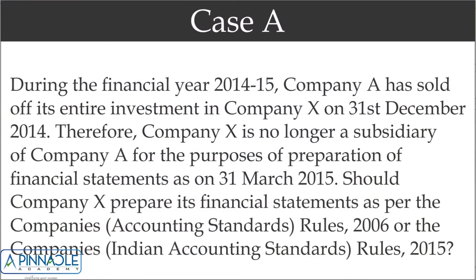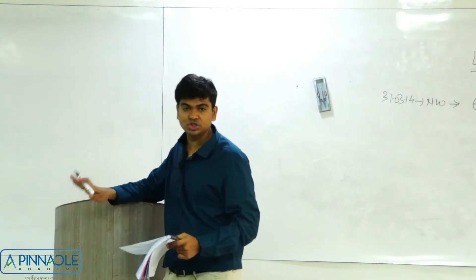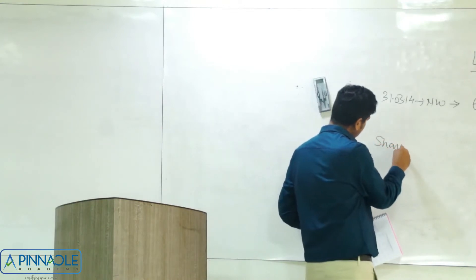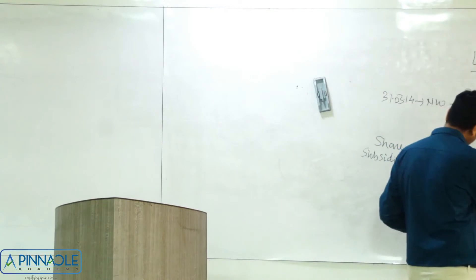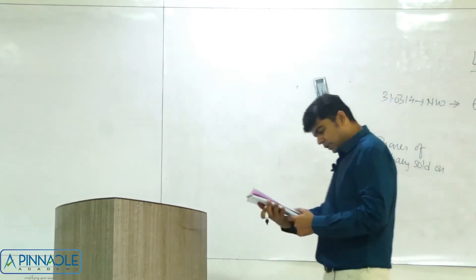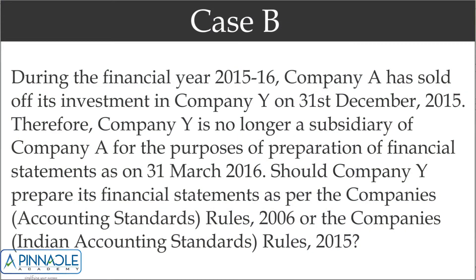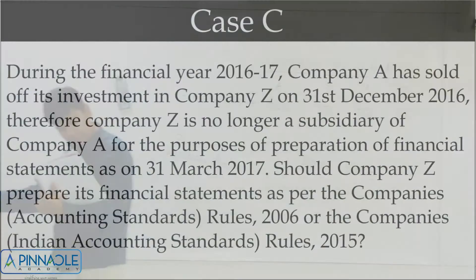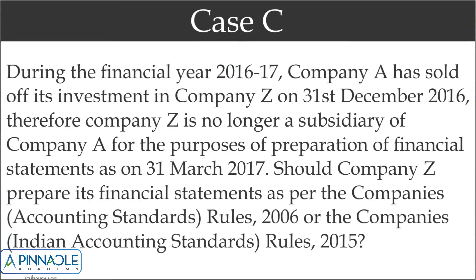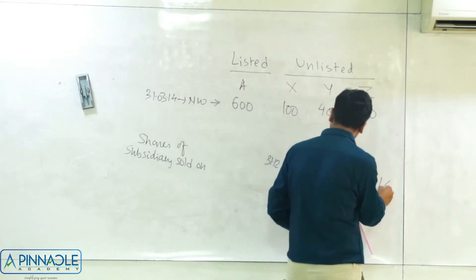During financial year 2014-15, Company A sold its entire investment in Company X on 31st December 2014. In case B, Company A sold its investment in Company Y on 31st December 2015. In case C, during financial year 2016-17, Company A sold its investment in Company Z on 31st December 2016. So the parent-subsidiary relationship was terminated on different dates.